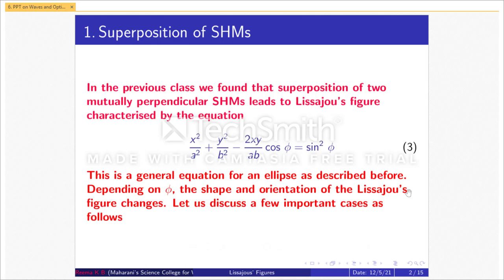This is a general equation for an ellipse as described before. Depending on the value of φ, the shape and orientation of the Lissajous figure changes. Let's now discuss a few important cases.